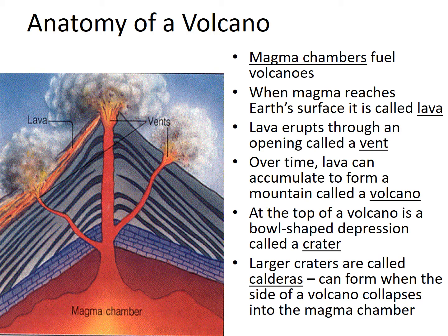The lava erupts through an opening called a vent, and volcanoes can have multiple vents. Over time, lava accumulates to form a mountain that is called the volcano. At the top of the volcano is a bowl-shaped depression called the crater. Larger craters are called calderas, which can also form when the sides of a volcano collapse into the magma chamber.